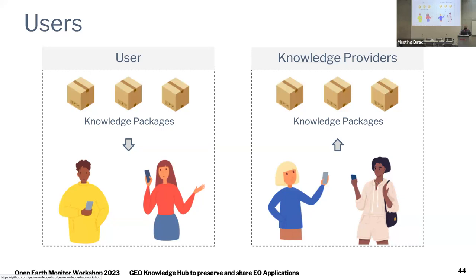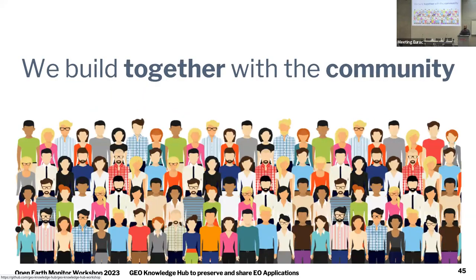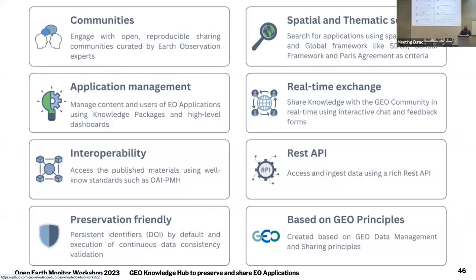To develop the GeoKnowledgeHub, we always use a community-centric approach where we build things together with our community, so our decisions, new features, and improvements are always based on community feedback. In the last year, we implemented various features including community support, various search methods, real-time exchange features, and interoperability-related features, all of which are now available in the GeoKnowledgeHub.